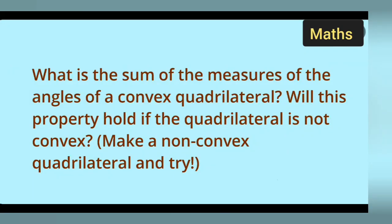Welcome to today's class of mathematics. Today's question is taken from class 8 mathematics, chapter 3, understanding quadrilaterals. The question is: what is the sum of the measures of the angles of a convex quadrilateral? Will this property hold if the quadrilateral is not convex? Make a non-convex quadrilateral and try. Let us start with this problem.